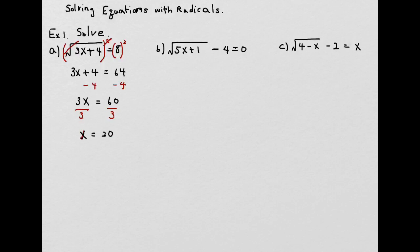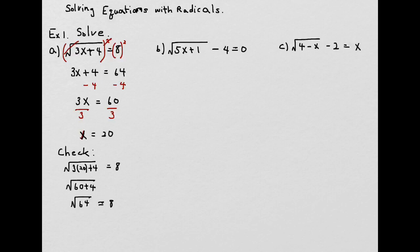This is one of the equations where you need to check your solution. Why? Because square roots have restrictions — you cannot have a negative inside a square root. So we replace x with 20 back into the original problem: square root of 3 times 20 plus 4 is the square root of 64, which is 8. That equals 8, so we keep x equals 20.